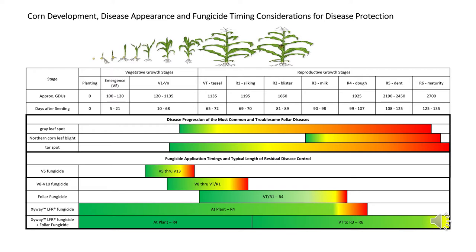And then finally, tar spot being new to the scene. In an irrigated situation it can show up early, but I think typically it's more like northern corn leaf blight where it shows up late, and again with the right environment it can progress quite rapidly.